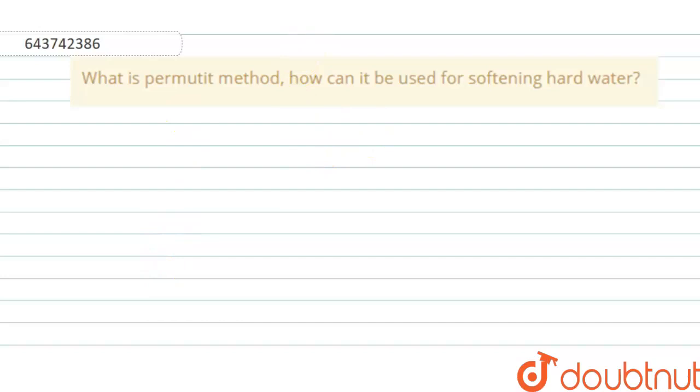What is permutite method and how can it be used for softening hard water? Okay, so permutite method is nothing but it is just simple filtration method.